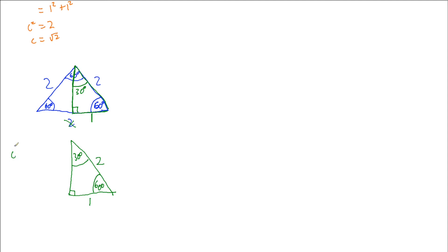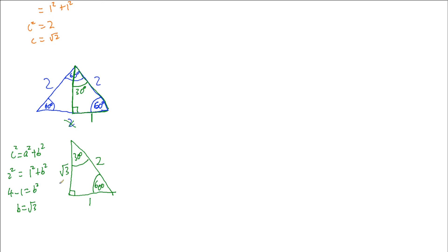Now I just need to find the remaining side. Using Pythagoras' theorem, z squared equals a squared plus b squared. My hypotenuse is 2, so 2 squared equals 1 squared plus b squared. Working this out: 4 minus 1 equals b squared, so b equals the square root of 3. This triangle gives me two possible angles — 30 degrees and 60 degrees.